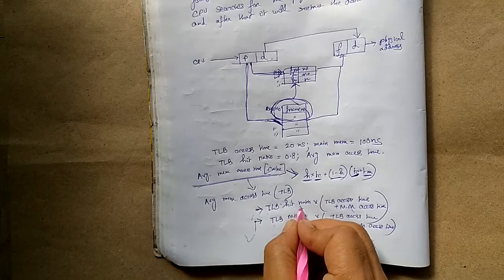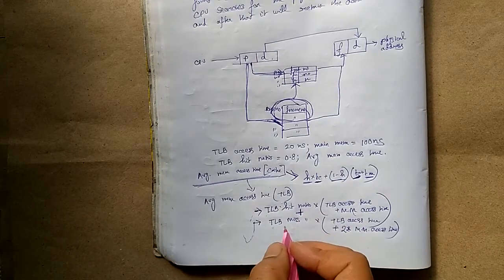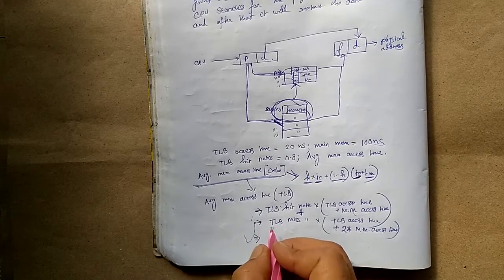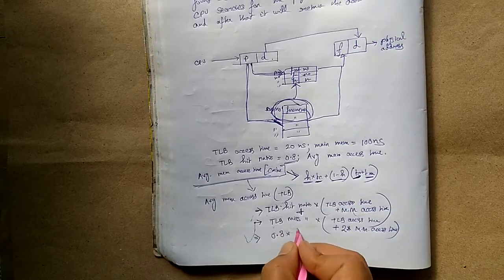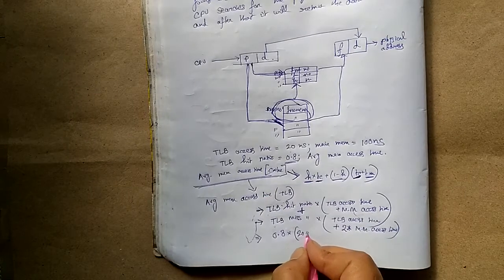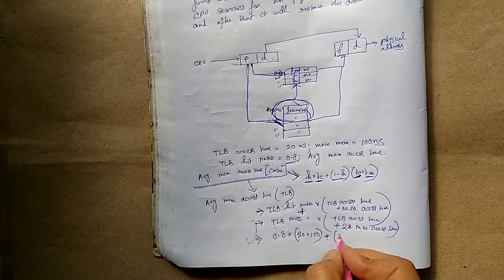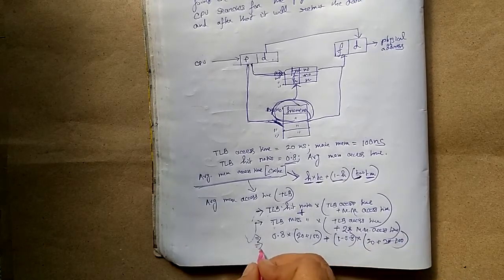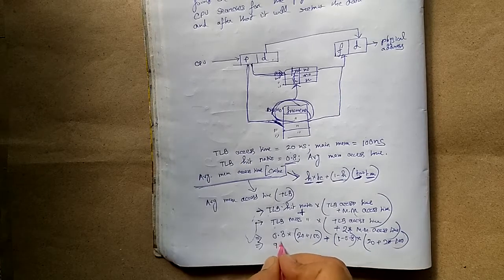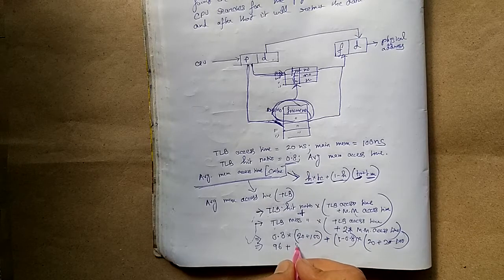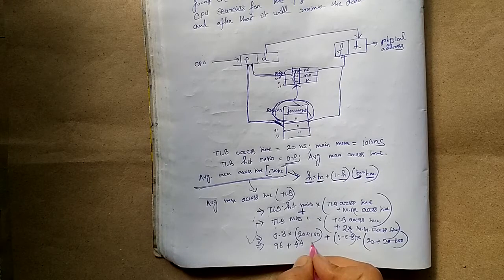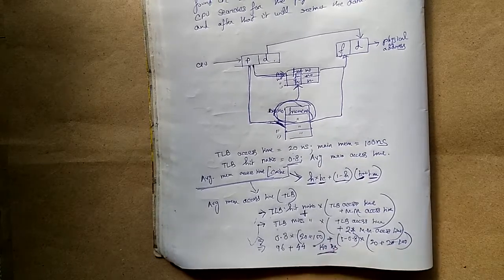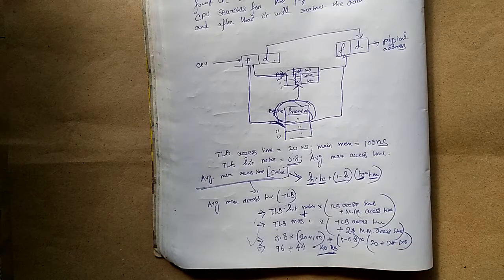Putting in the values: 0.8 × (20 + 100) + (1 − 0.8) × (20 + 2 × 100) = 0.8 × 120 + 0.2 × 220 = 96 + 44 = 140 nanoseconds. So the average memory access time using TLB is 140 nanoseconds.